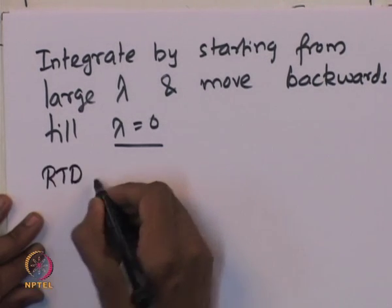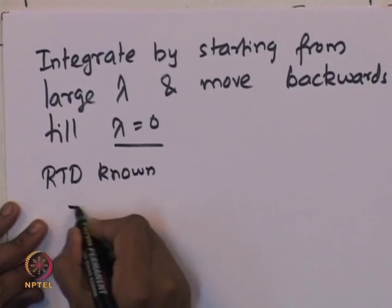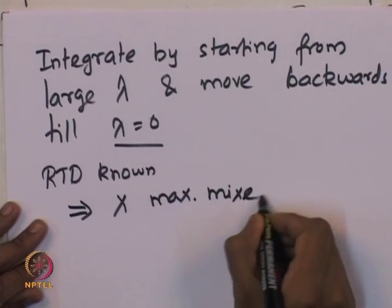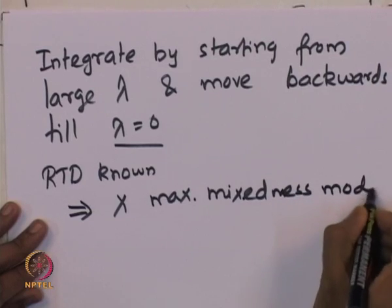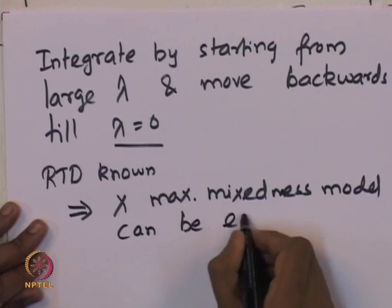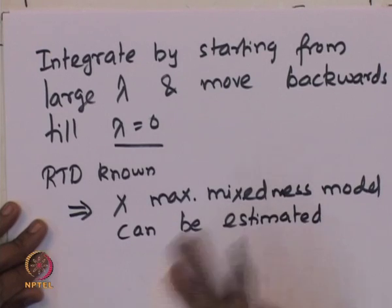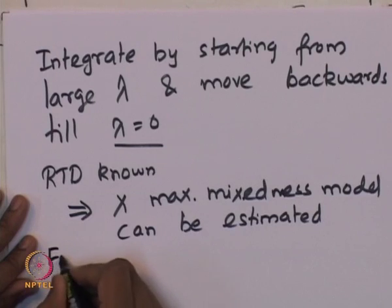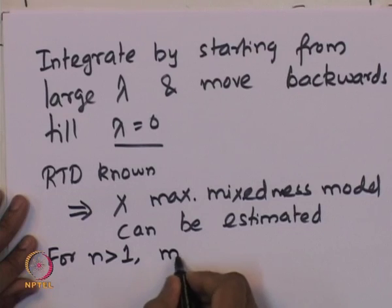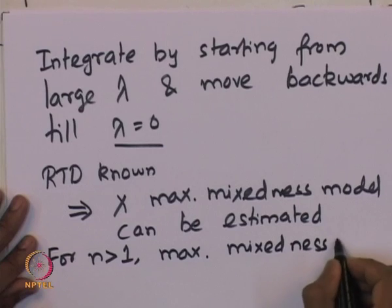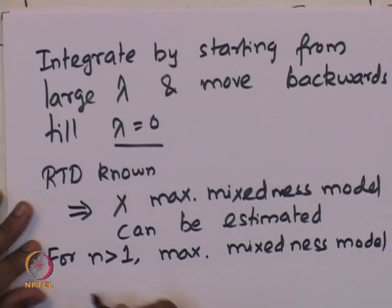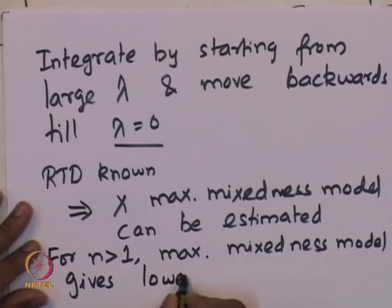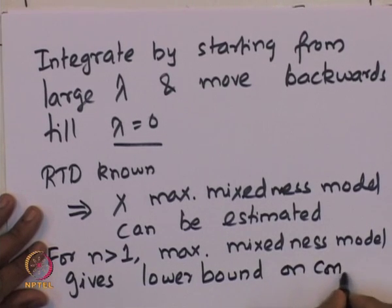If the RTD is known, the conversion for the maximum mixedness situation can be estimated by integrating the mole balance equation. This conversion provides a bound for the conversion of the species in the non-ideal reactor. For reaction order n > 1, it has been observed that the maximum mixedness model gives the lower bound on the conversion, while the complete segregation model gives the upper bound.